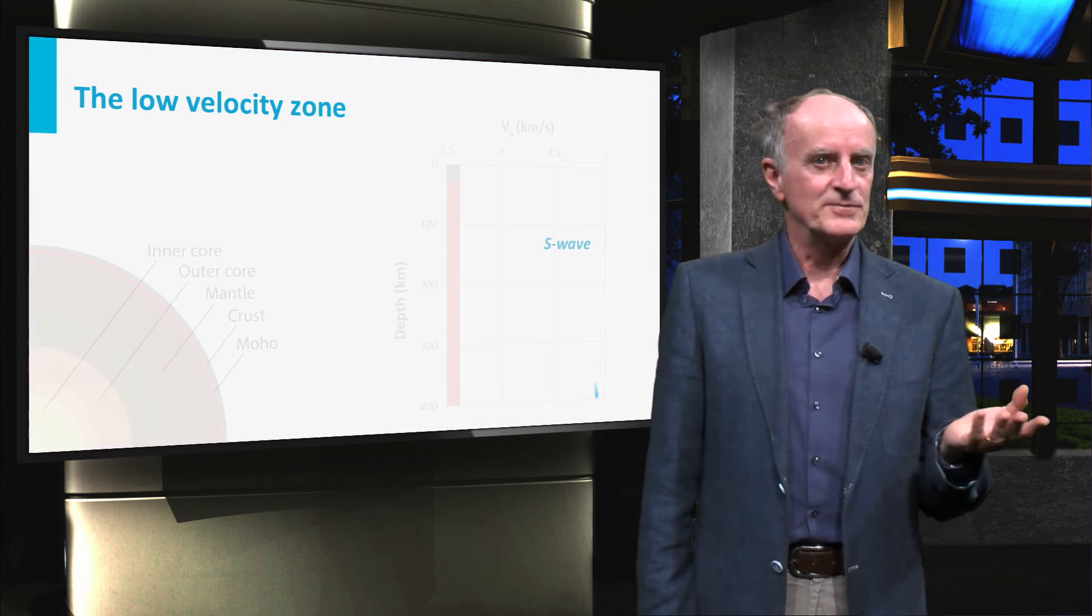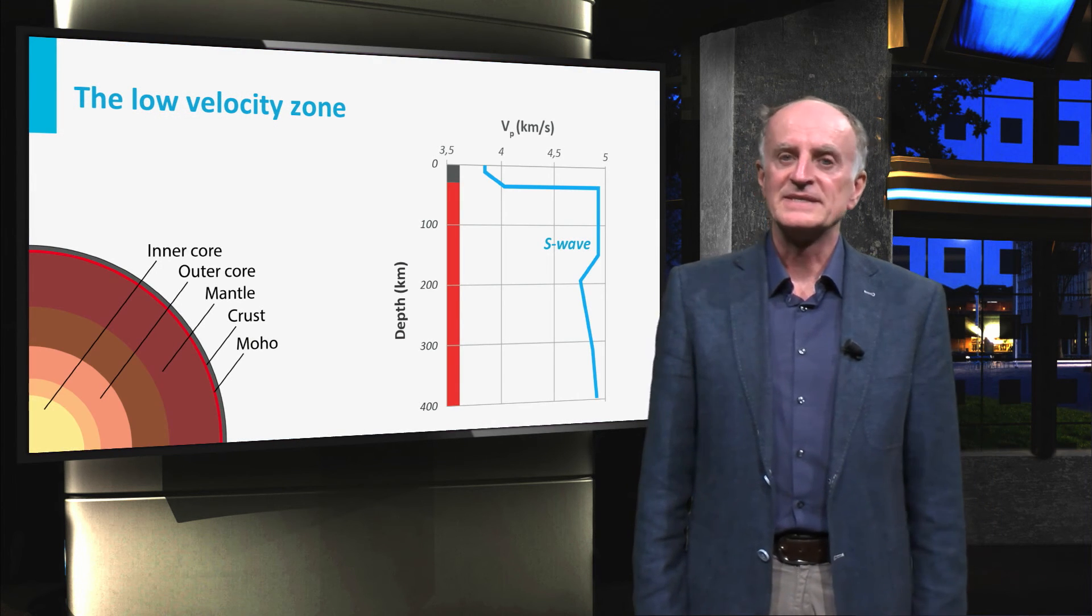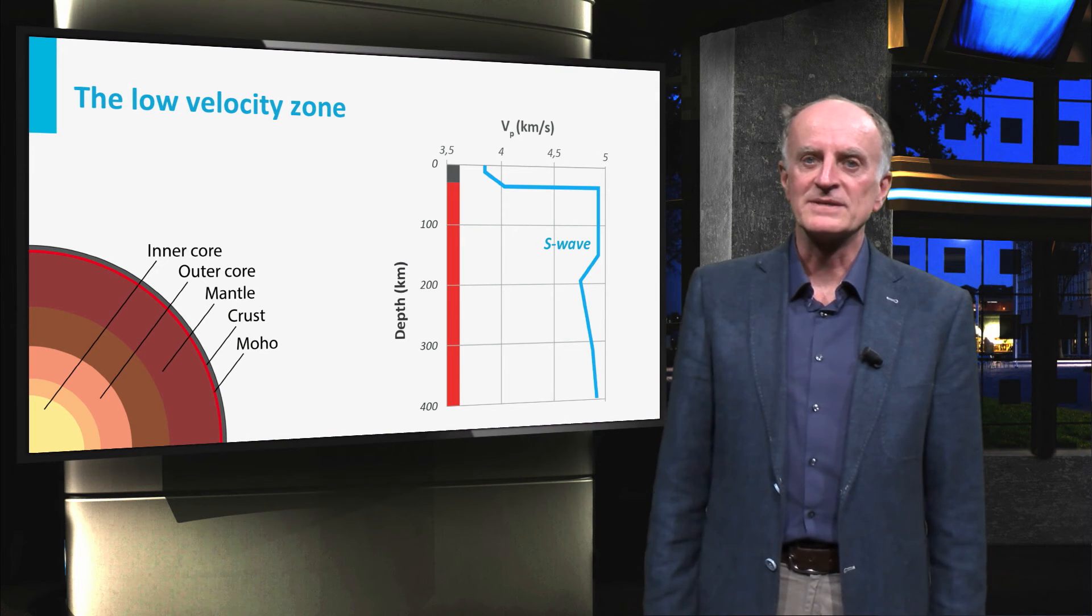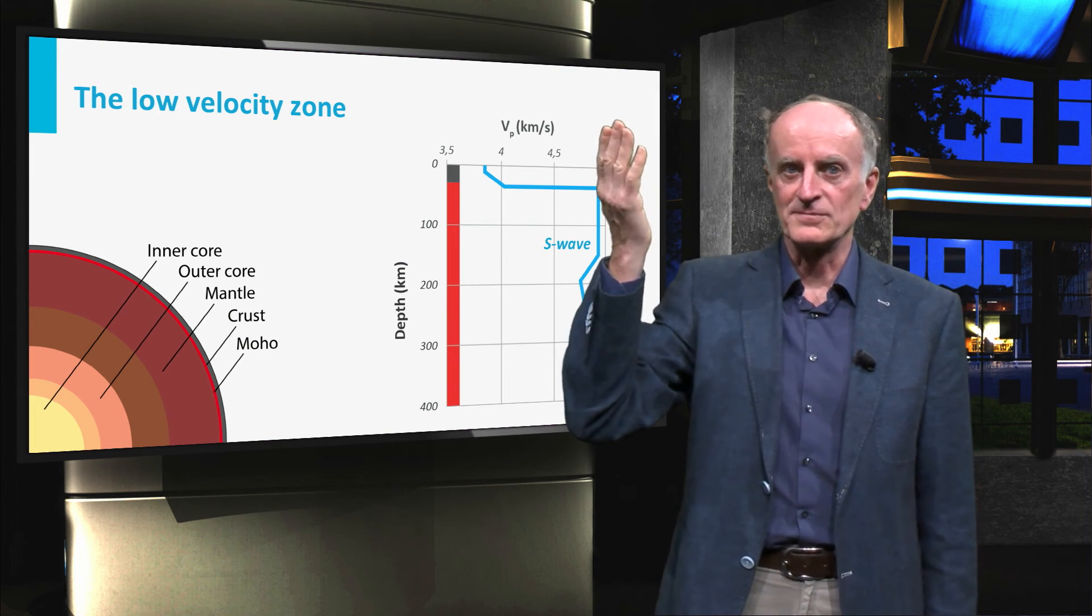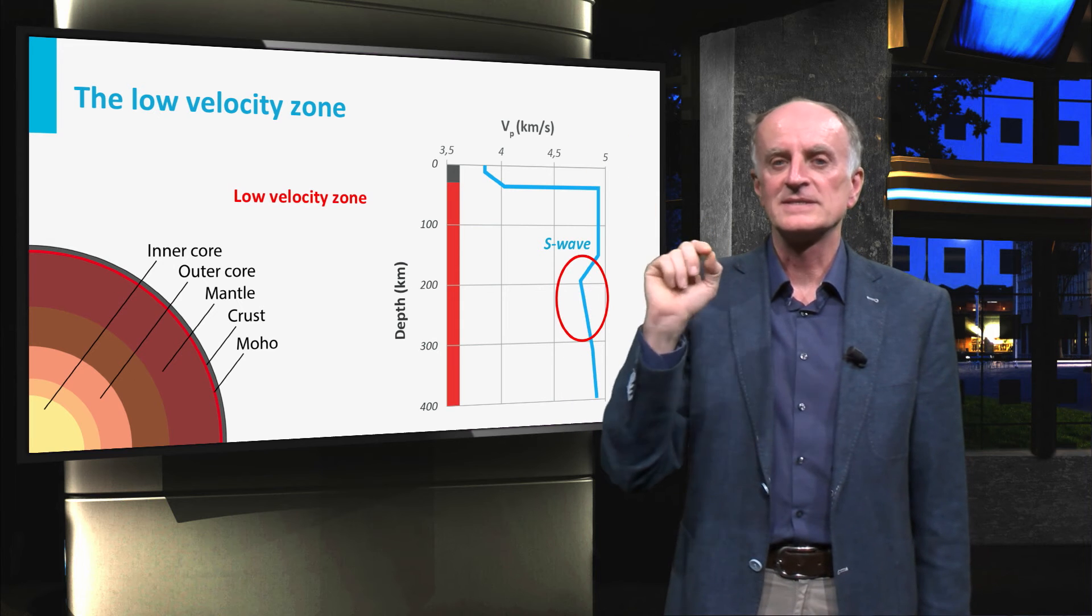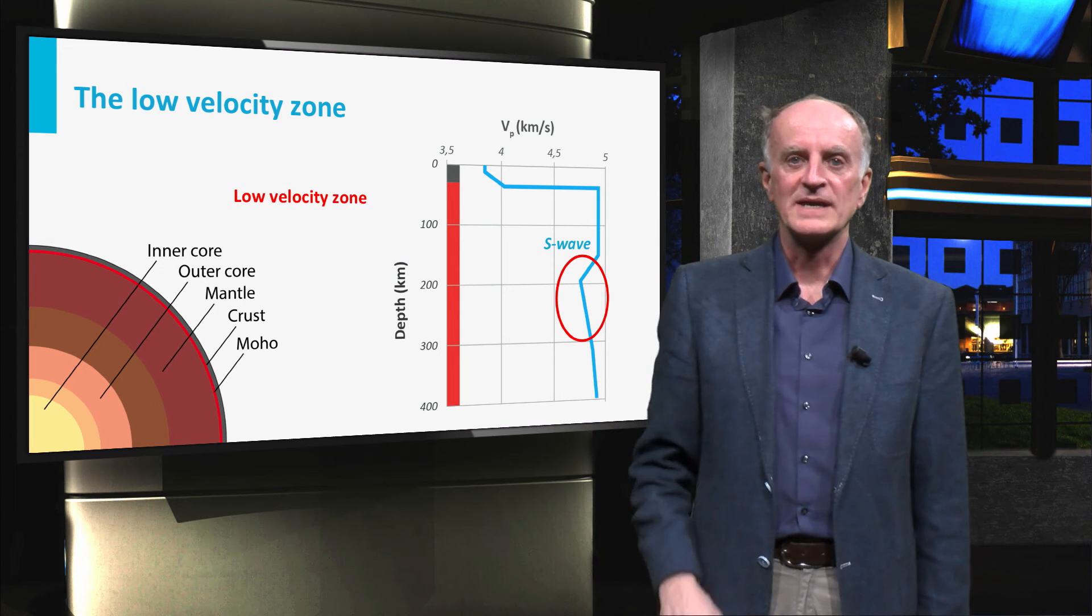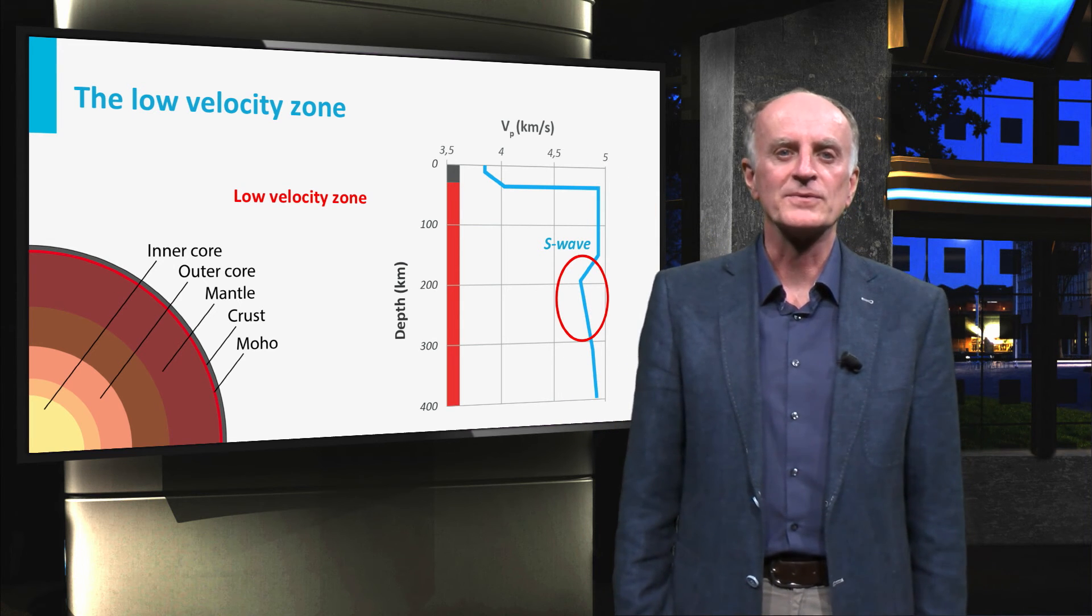Going back to the plot of seismic wave velocities, we see that at depths of 100 to 200 km values are lower than the underlying and overlying rocks. This is the low velocity zone, a major feature controlling Earth's movements.